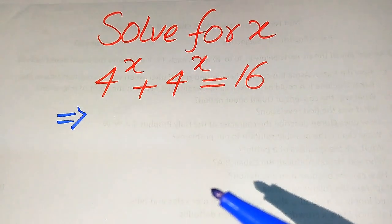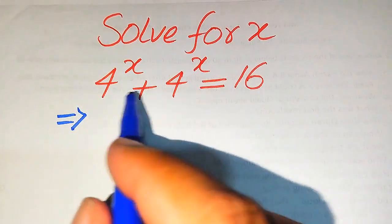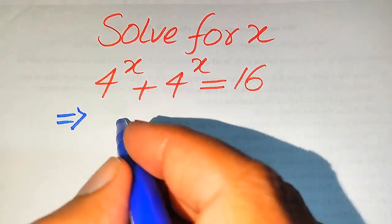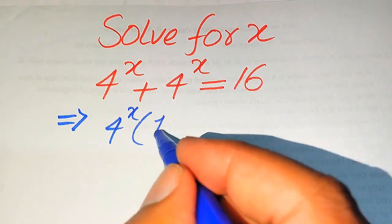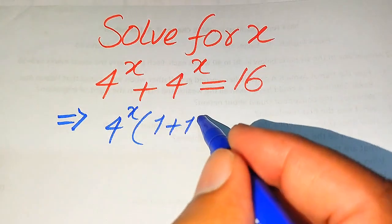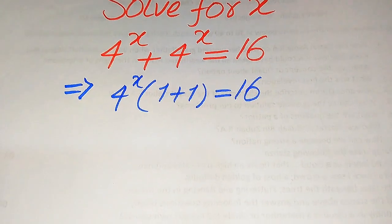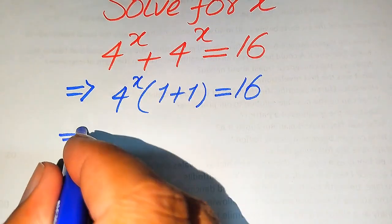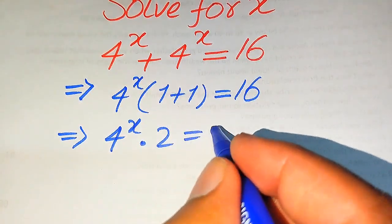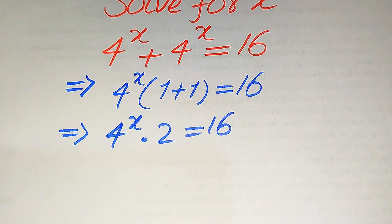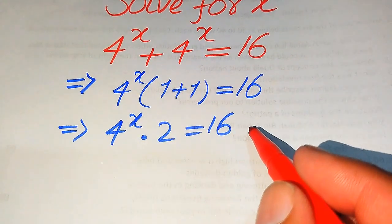The very first thing we are going to do: you can see that 4 to the power of x is a common term. When we take 4 to the power of x as common, the remaining values are 1 plus 1, which equals 16. So we have 4 to the power of x times (1 + 1), which becomes 4 to the power of x times 2, equals 16.